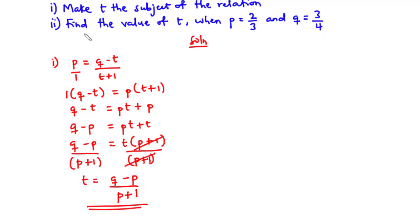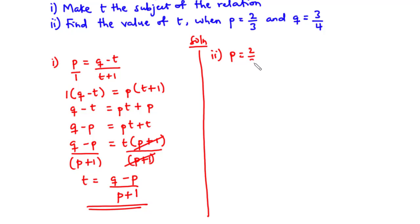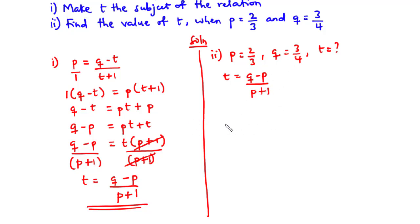Now let's solve part ii. We are going to find the value of t when p is 2 over 3 and k is 3 over 4. So we have p to be 2 over 3 and k to be 3 over 4. We are going to find the value of t. So t is equal to k minus p over p plus 1. Now let's substitute the values of p and k: t equals 3 over 4 minus 2 over 3, divided by 2 over 3 plus 1.